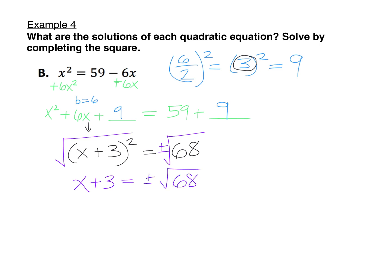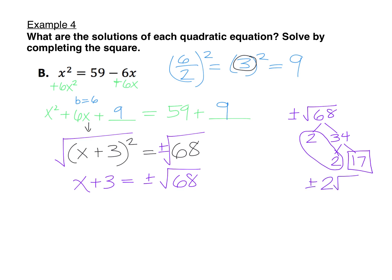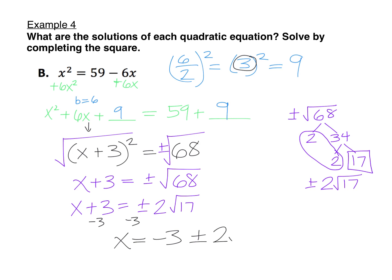For square root of 68, we can simplify it. Making a factor tree: 2 goes into 68 thirty-four times, and 34 is 2 times 17. So there's a pair of 2s, and 17 can't be broken down further. We can rewrite that as plus or minus 2 root 17. So x plus 3 equals plus or minus 2 root 17. Subtracting 3 on each side gives a final answer of x equals negative 3 plus or minus 2 root 17.